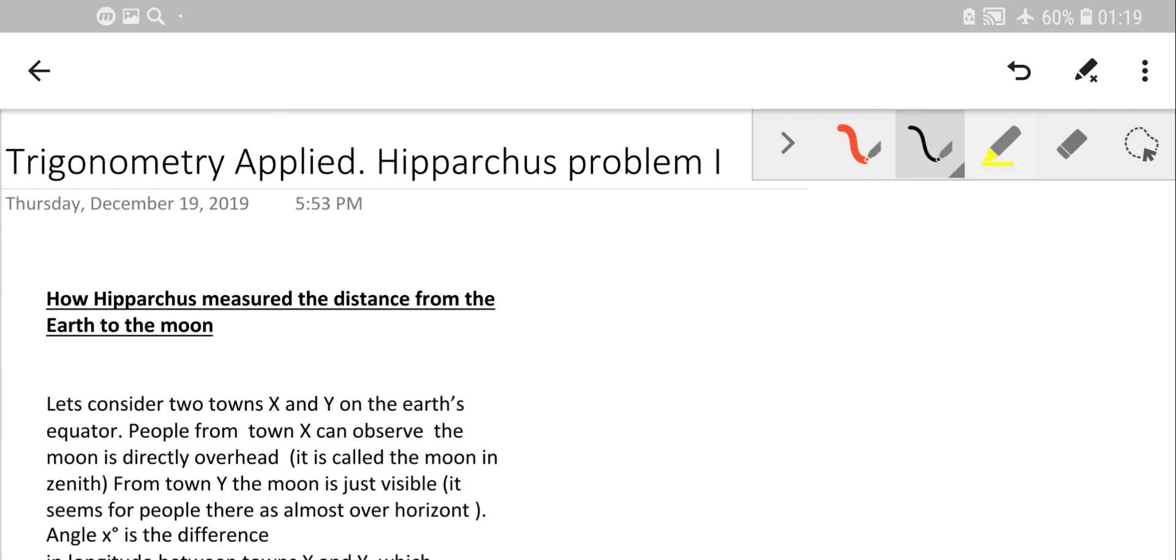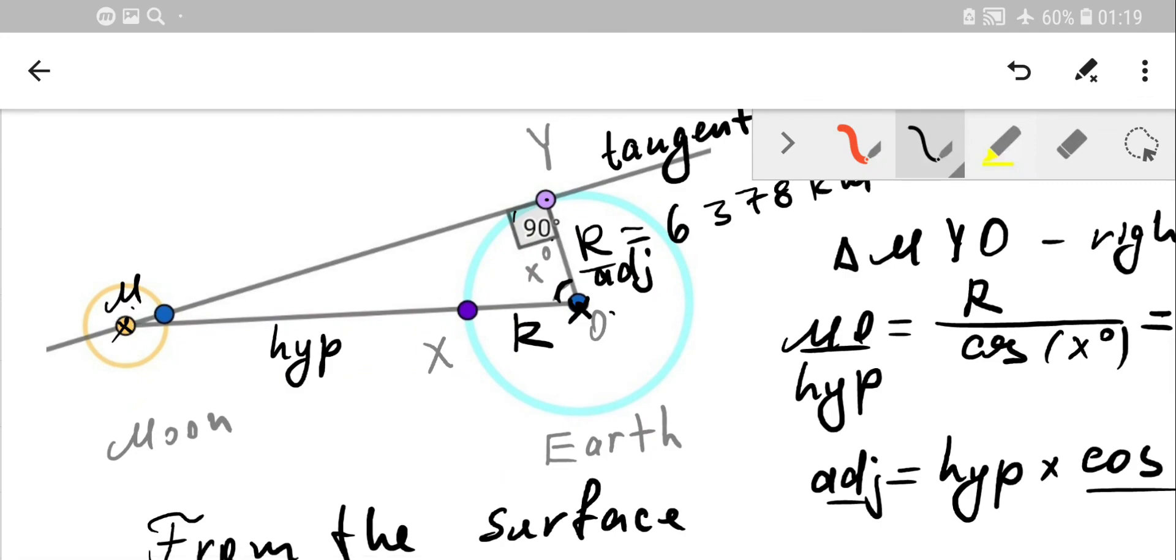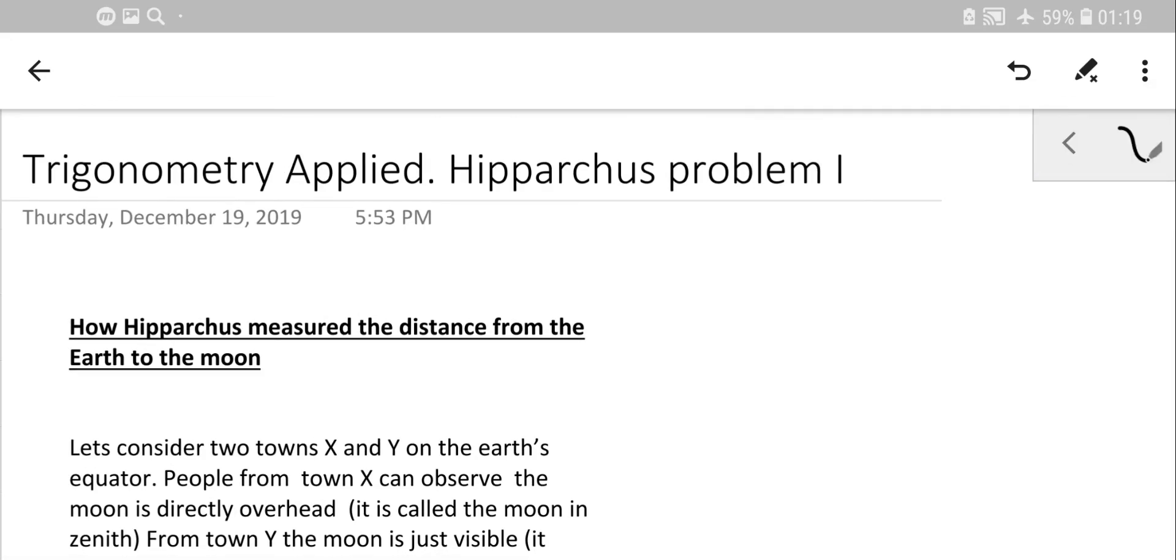The next part will be about how Hipparchus measured the radius of the moon. Right now we have MX, which includes the moon's radius. For more precise data, we need to subtract the moon's radius. Watch my next video on problem two—how Hipparchus measured the radius of the moon. You'll get more educated with extra knowledge as a bonus. Hope you enjoy. Don't forget to subscribe. Peace!